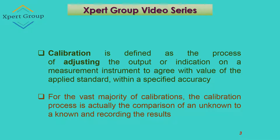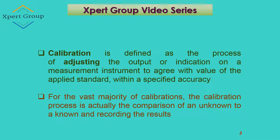Now, what is calibration and how it could be defined? Calibration is defined as the process of adjusting the output or indication on a measurement instrument to agree with the value of the applied standard within a specified accuracy. This means you have a standard and you make other equipment, instruments, or tools match that standard.